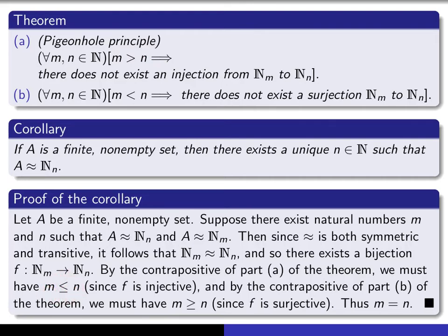Now if you do the same thing with part (b), just look at the contrapositive of this, for all m and n, if there exists a surjection from here to here, then m must be bigger than or equal to n.